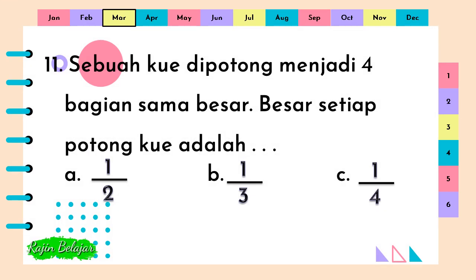Sebuah kue dipotong menjadi empat bagian sama besar. Besar setiap potong kue adalah titik-titik-titik. A. Satu per dua. Jawaban yang benar adalah C. Satu per empat.